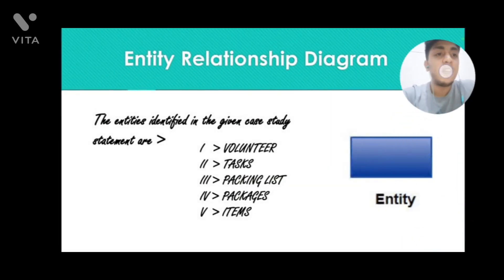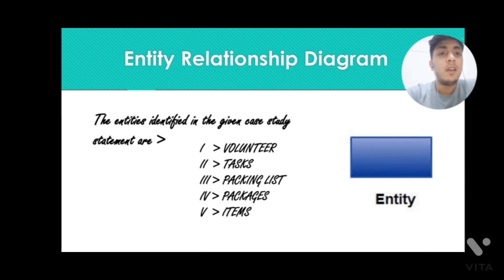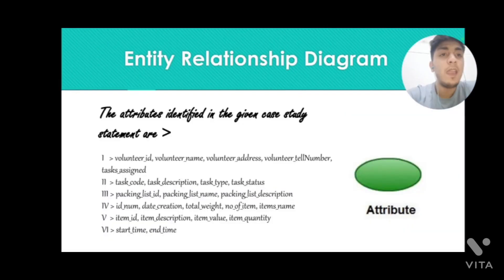In our case study of United Helpers, we have five entities: volunteer, task, packing list, packages, and items. Each entity has different attributes. For example, in the volunteer entity we have volunteer ID, volunteer name, volunteer address, volunteer telephone number, and task assigned.